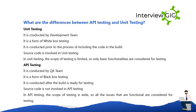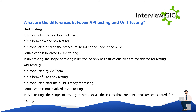What are the differences between API testing and unit testing? Unit testing is conducted by the development team; it is a form of white-box testing; it is conducted prior to including the code in the build; source code is involved; and the scope is limited, so only basic functionalities are considered. API testing is conducted by the QA team; it is a form of black-box testing; it is conducted after the build is ready; source code is not involved; and the scope is wide, so all functional issues are considered.